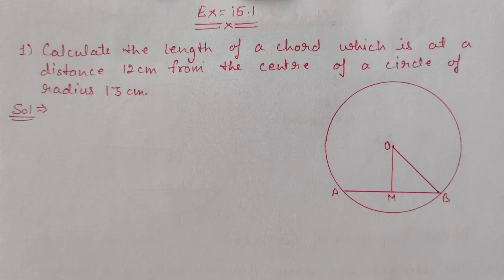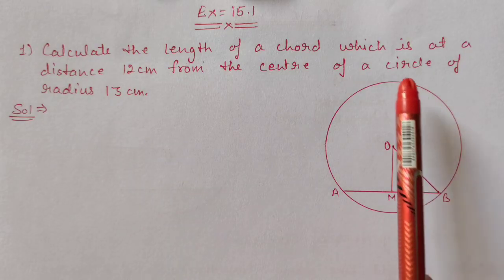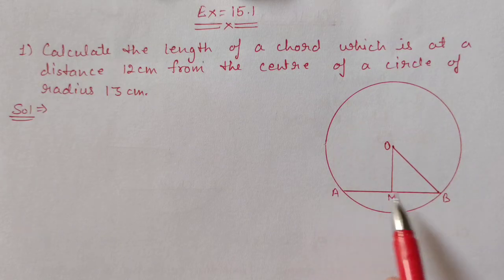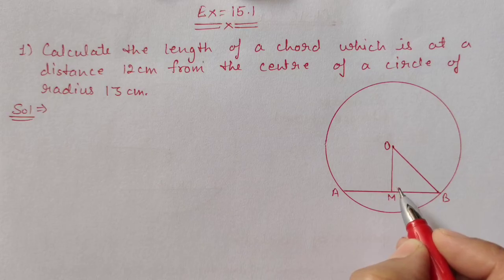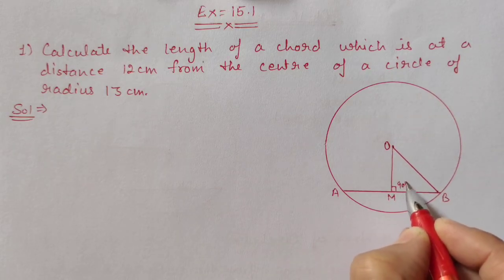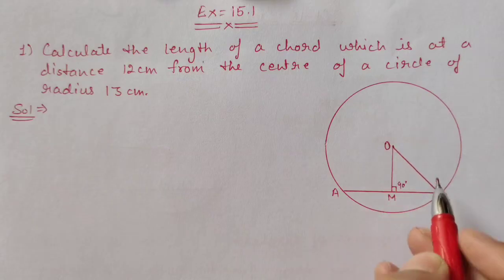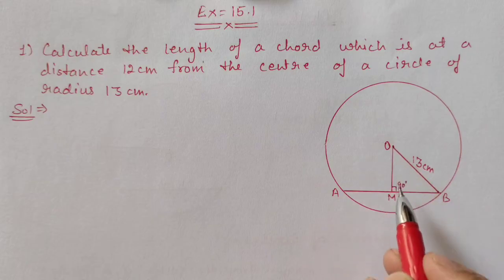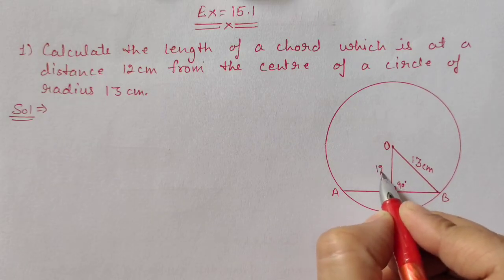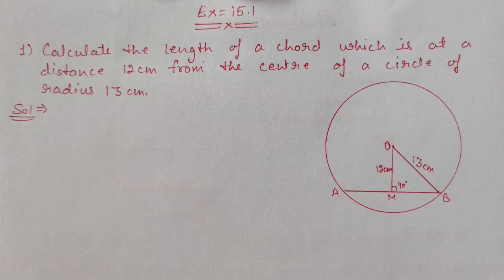Now we will start Exercise 15.1, Question 1: Calculate the length of a chord which is at a distance of 12 cm from the center of a circle of radius 13 cm. We draw a circle with chord AB, and from the center we draw a perpendicular to the chord, so this angle is 90 degrees. The radius is 13 cm and the distance from the center to the chord is 12 cm.